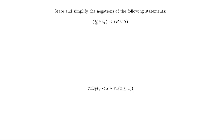Let's look at an example of how to state and simplify the negation of a couple of statements. First, the statement: P and Q implies R or S. I want to state the negation of this. Now there's a real easy way to do that — just group them together and put a negation in front.